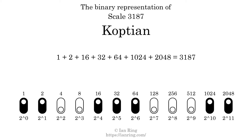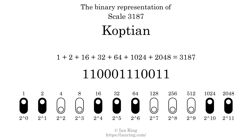The scale number not only enumerates the scale with a unique index, but it also literally describes the tonal content of the scale, represented as a binary number in base 2. The scale number is 1, 1, 0, 0, 0, 0, 1, 1, 1, 0, 0, 1, 1.